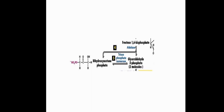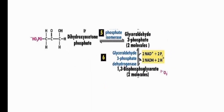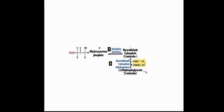Step 6: The two molecules of G3P are each converted into 1,3-bisphosphoglycerate by the enzyme glyceraldehyde-3-phosphate dehydrogenase. Two NAD⁺ molecules are reduced to two NADH + 2H⁺. No ATP is produced in this step, but the NADH formed will later generate ATP via the electron transport chain.